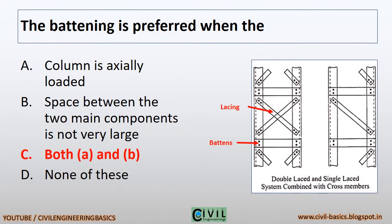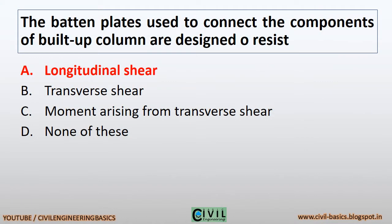Battening is preferred when the column is axially loaded and the space between the two main components is not very large. The batten plates used to connect the components of a built-up column are designed to resist longitudinal shear.